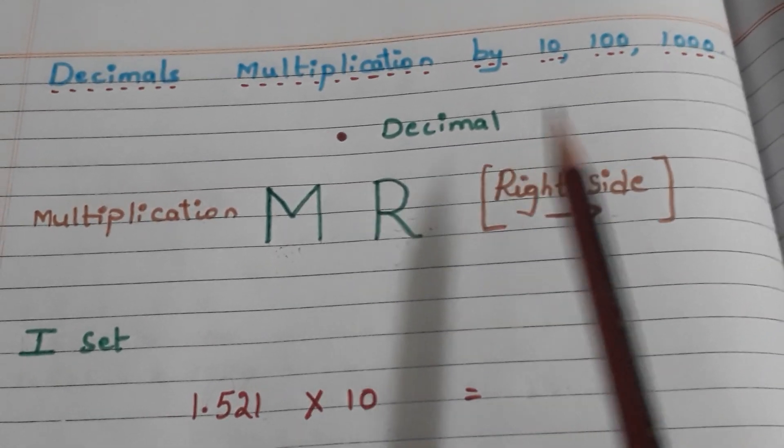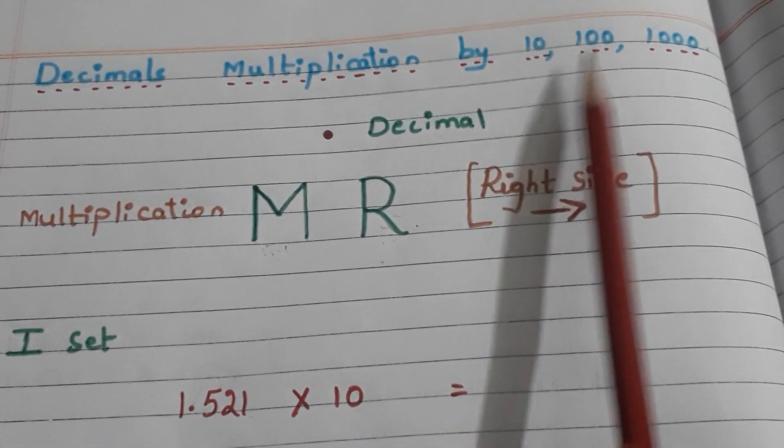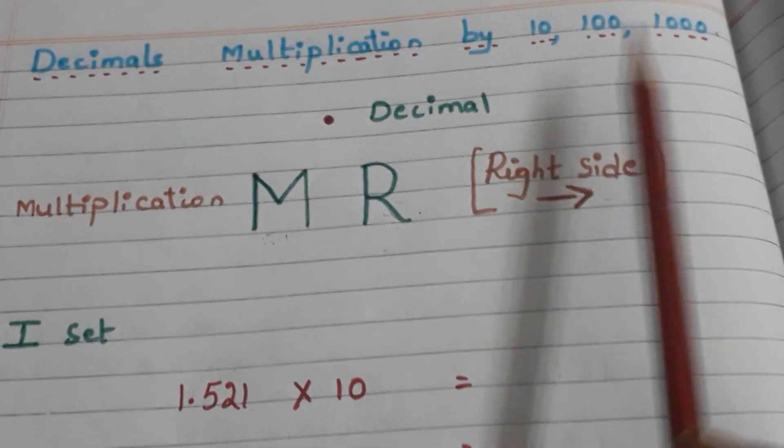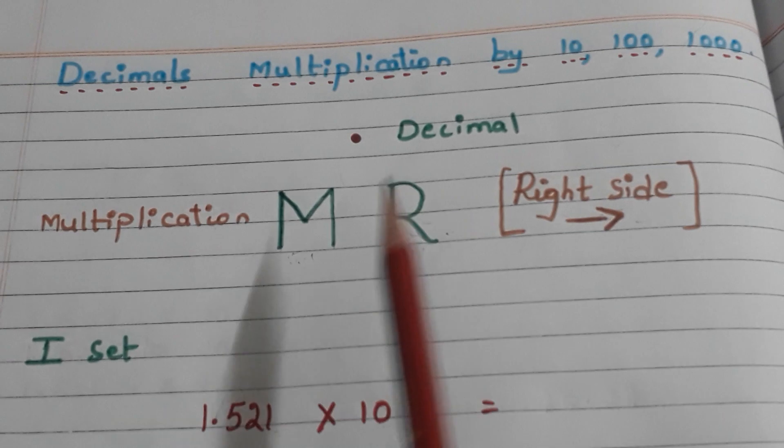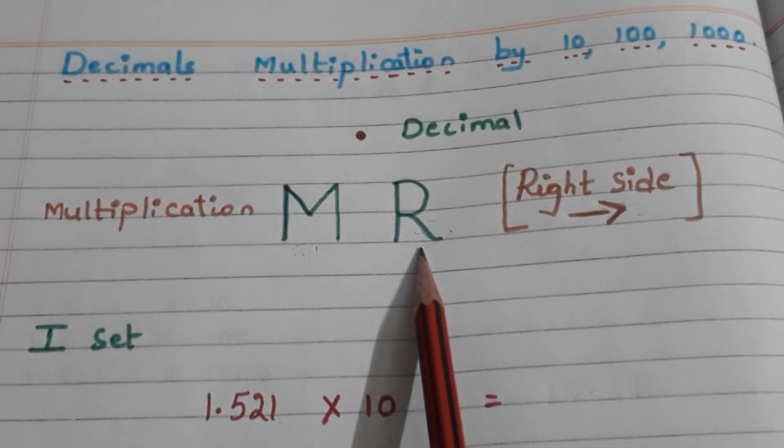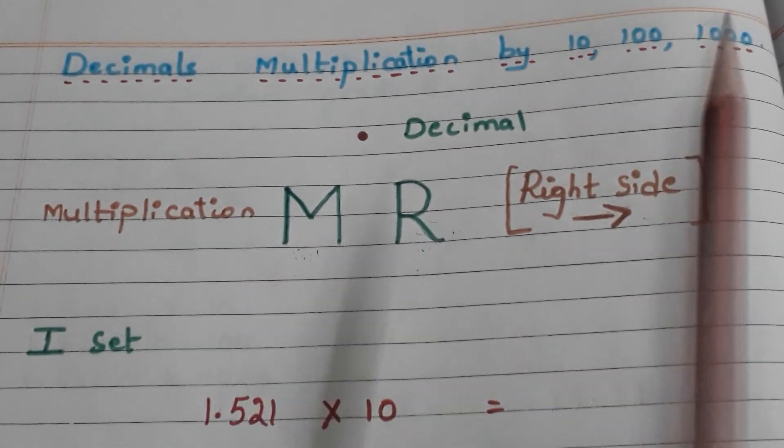When we are going to multiply decimal with 10, 100, or 1000, we are moving the decimal to the right side. That is the shortcut: M means multiplication, R means right side. Let us see with the examples.